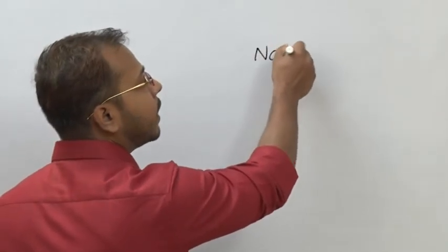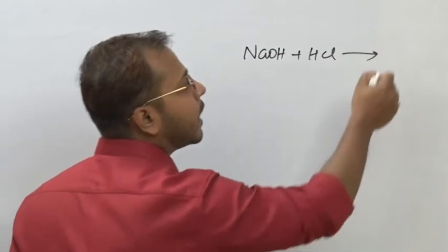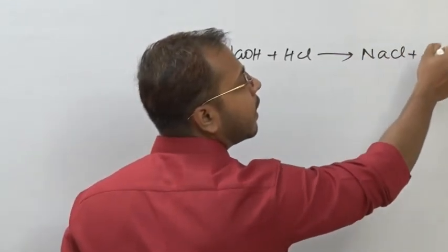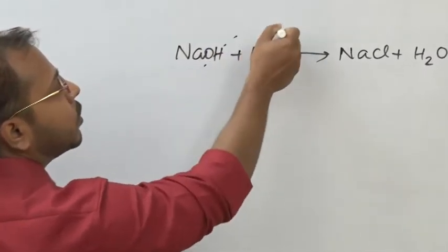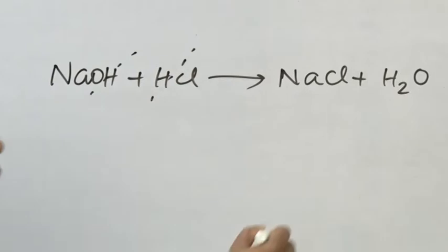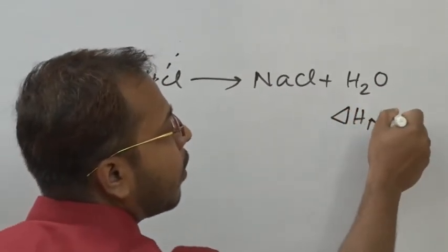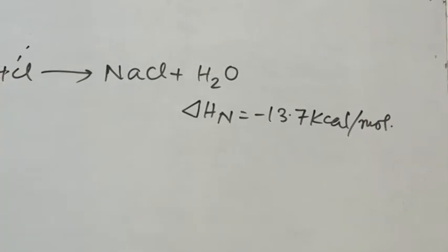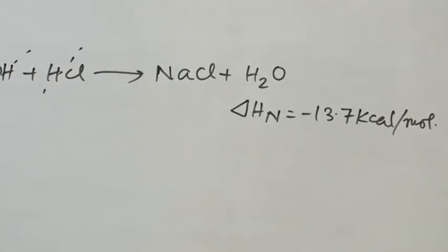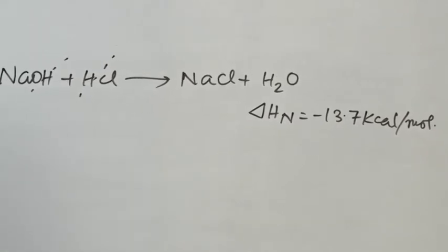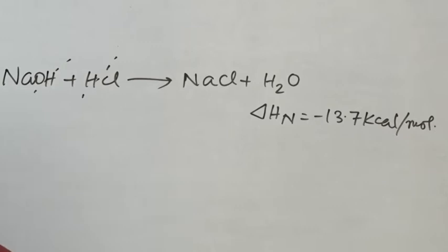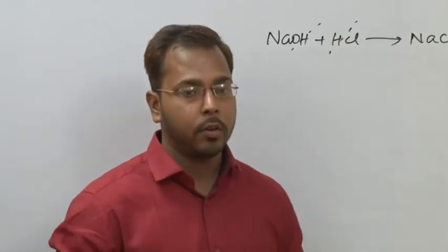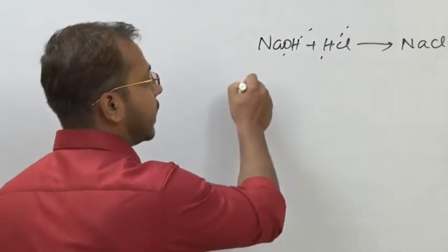In kilocalorie, if one mole of HCl and NaOH react, they form NaCl and H₂O, and the heat of neutralization is minus 13.7 kilocalorie per mole. When one mole of H+ is neutralized by one mole of OH-, the heat released is minus 57.1 kilojoule per mole, or minus 13.7 kilocalorie per mole.